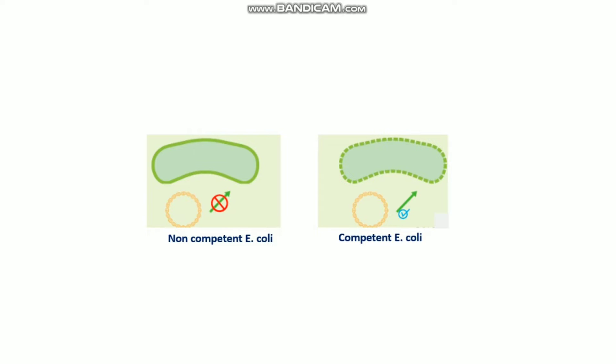Although there are many naturally occurring competent cells, E. coli is not naturally competent. Therefore, in order to use E. coli cells for cloning, researchers must induce competence in E. coli.